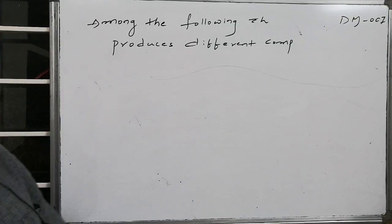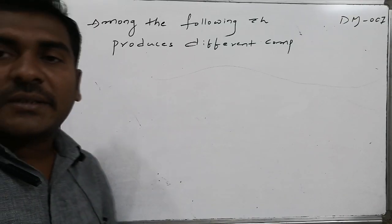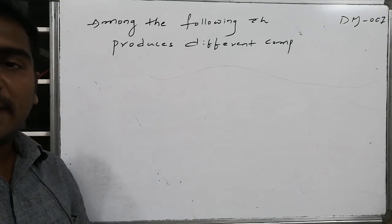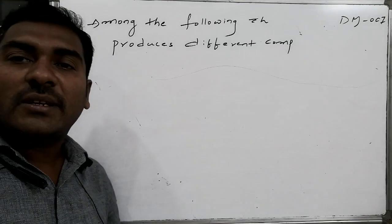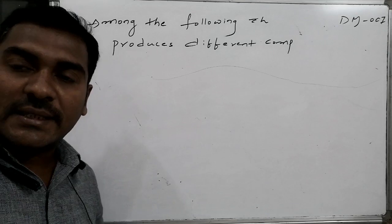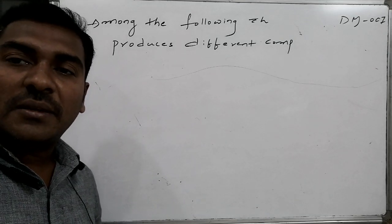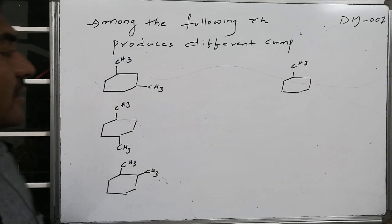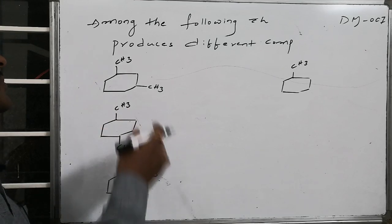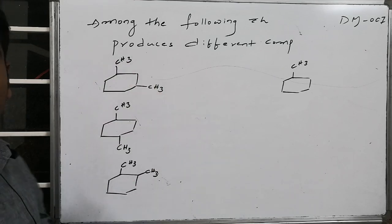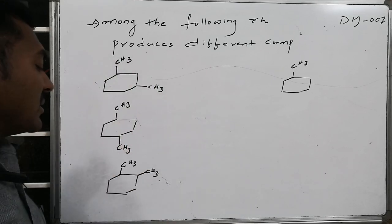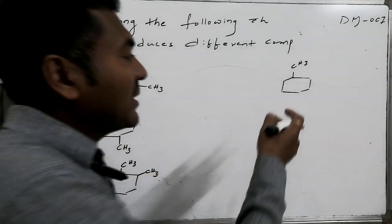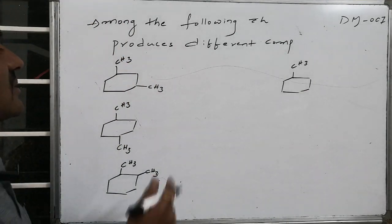Among the following compounds related to benzene, on ozonolysis, which produces different compounds compared to the others? The given structures related to benzene derivatives are: meta-dimethylbenzene, para-dimethylbenzene, ortho-dimethylbenzene, and toluene (methylbenzene).